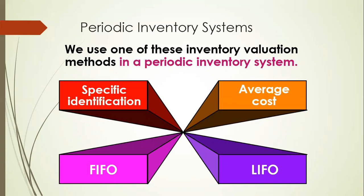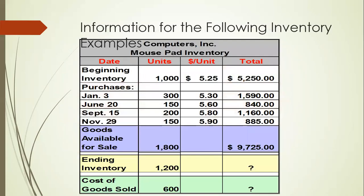In the periodic inventory system, we also use four methods for inventory calculations, which we have already discussed: specific identification, average cost method, FIFO, and LIFO.